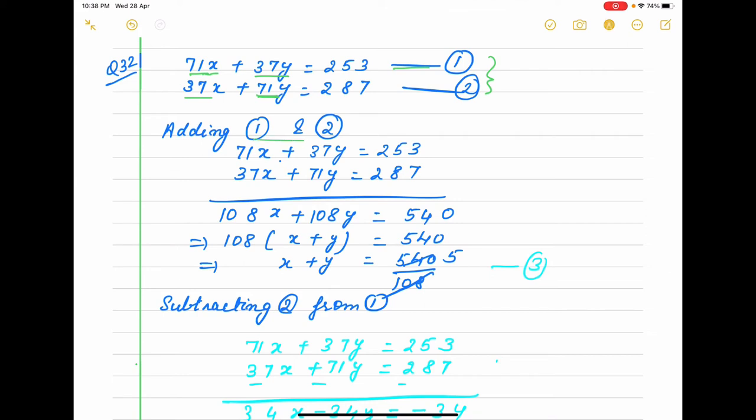We add equations 1 and 2. It is 1+7=8, 7+3, 100x + 100y = 540. Maximum cases, you will see that you can take anything common, 100 common. And it is 108 times 5, so x+y = 5. This is third equation.